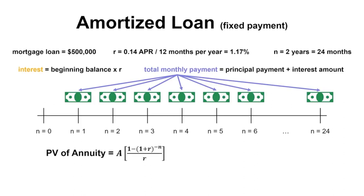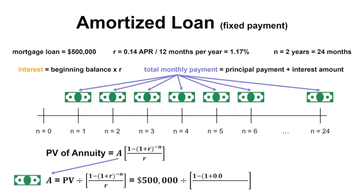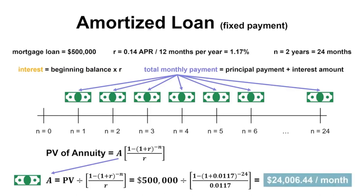The formula is as follows. We plug in our values, where the effective monthly rate is 14% divided by 12, which equals 1.17%, and n is equal to 2 years times 12 months, or 24 months in total. We calculate a fixed payment of $24,006.44 per month.